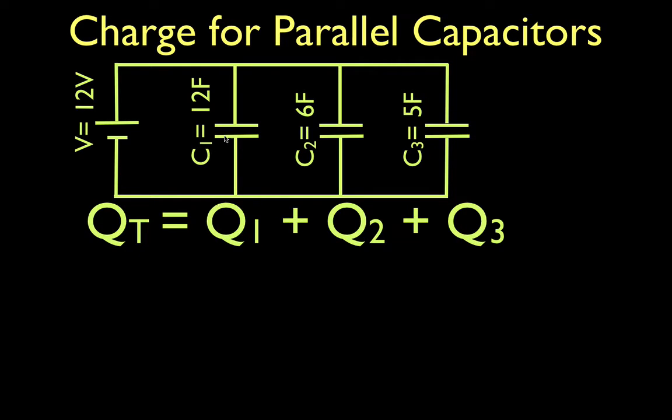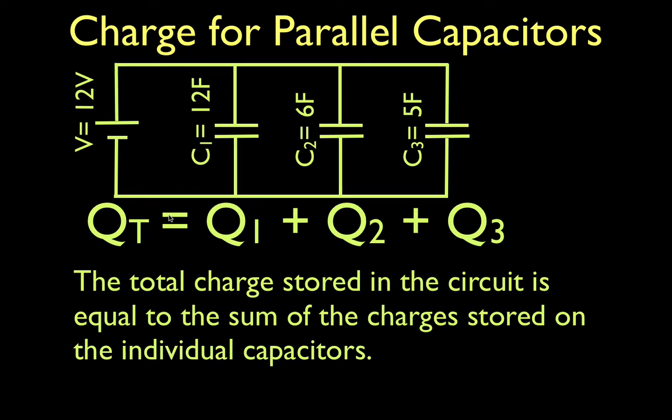You just add up this charge plus this charge plus this charge, and that is how much charge is available if you wanted to then use that charge. So the total charge is equal to Q1, which Q stands for charge, plus Q2 plus Q3, and we say the total charge stored in the circuit. The total charge stored in the circuit is equal to the sum of the charges stored on the individual capacitors.